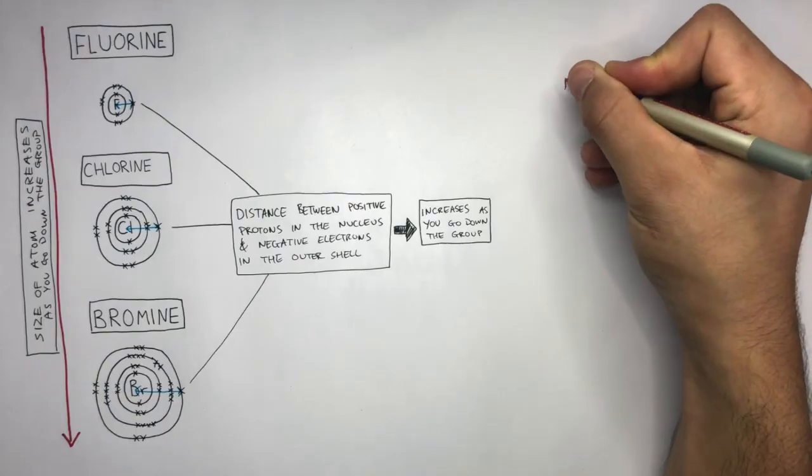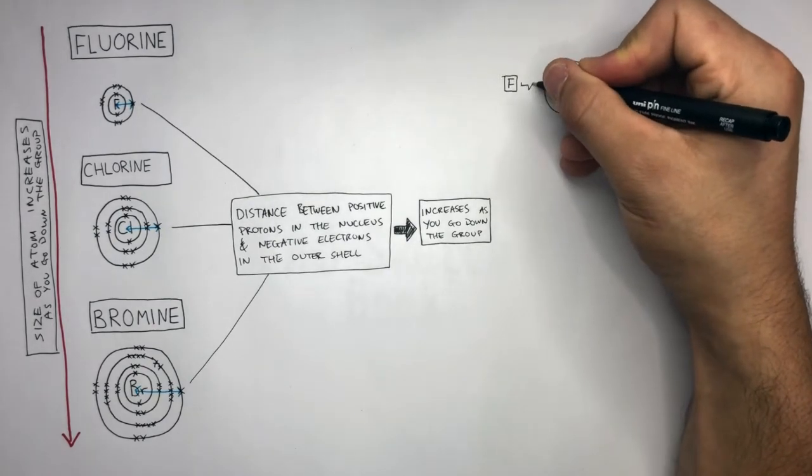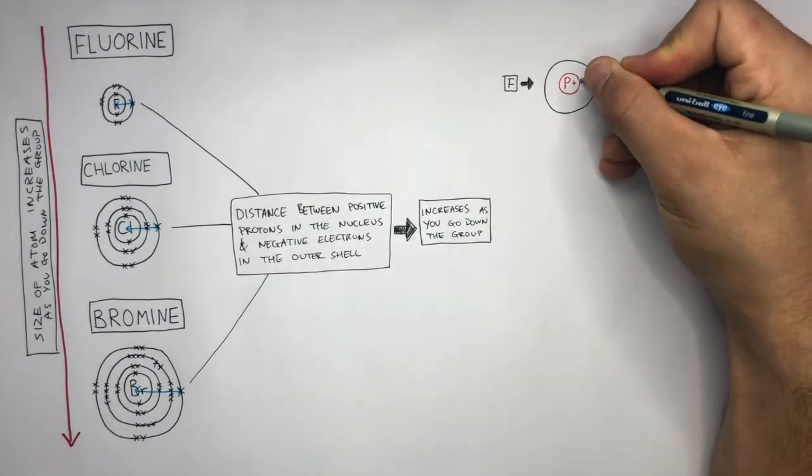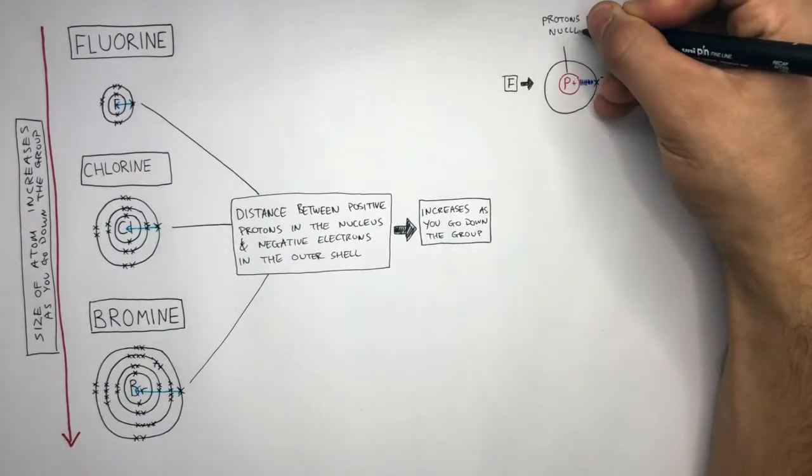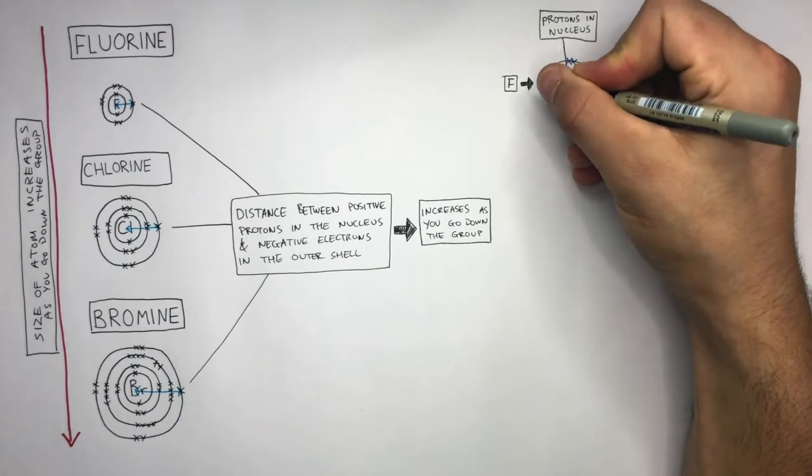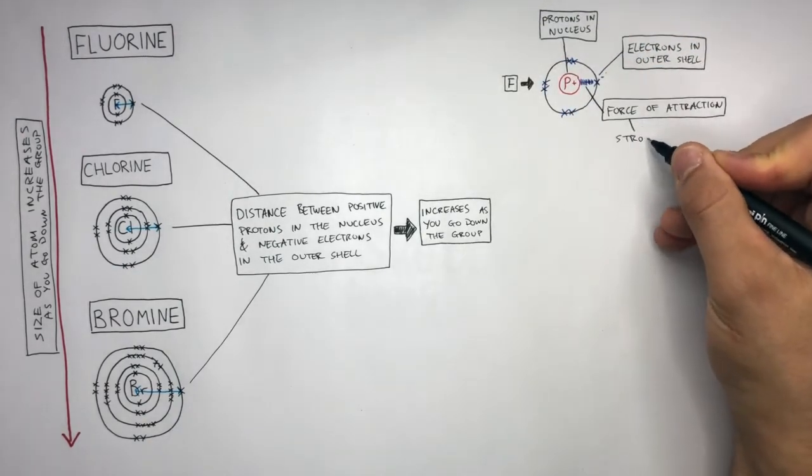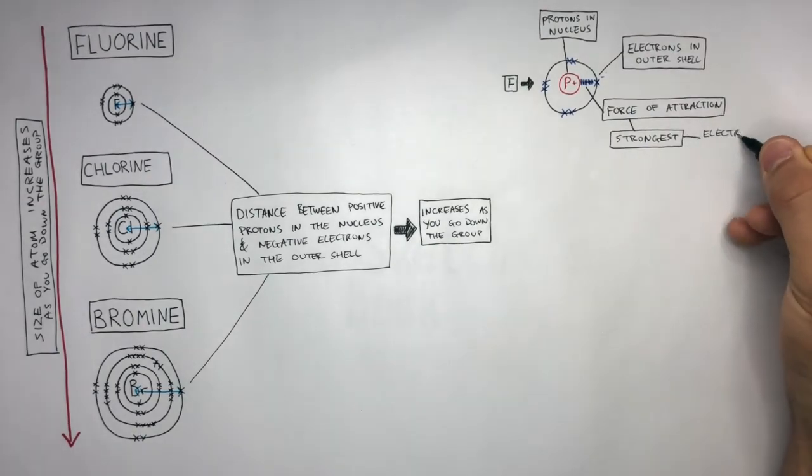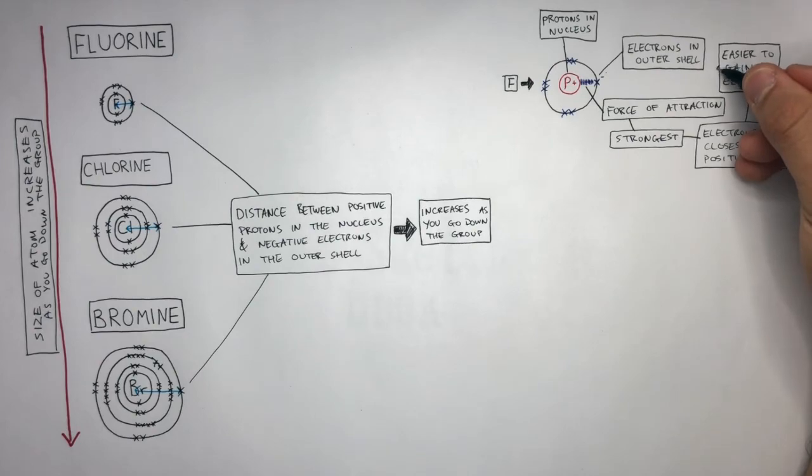This represents the positive nucleus and the outermost shell of a fluorine atom. This blue line represents the electrostatic force of attraction between the protons in the nucleus and the seven electrons in the outer shell. So this force of attraction is strongest because the electrons are closest to the positive nucleus. This makes it easier to gain one electron due to the strong force of attraction pulling the electron towards the positive nucleus.